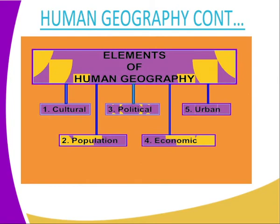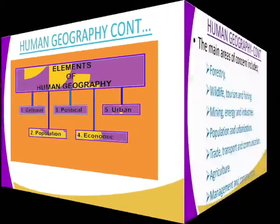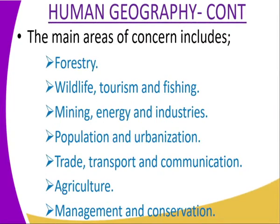The elements of human geography include the cultural, population, political, economic and urban aspects. It covers areas such as forestry, wildlife, tourism, fishing, mining, energy industries, population and urbanization, trade, transport and communication, agriculture, and management and conservation. All of that is what is covered in Geography Paper Two.